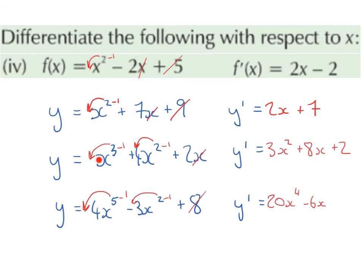In our next example, we have y equals x cubed plus 4x squared plus 2x. Again, we bring down the power in front, so the 3 comes down in front of the x, giving us 3x, and we reduce the power by 1. 3 take away 1 is 2, so we get 3x squared. Next, we have 4x squared. We bring down the power in front — this does not become 24, it becomes 2 multiplied by 4, which gives us 8. And then x squared, we reduce the power by 1. 2 take away 1 is 1, which is just 8x. Next, we have 2x, so we can just cross off the x, and we're left with 2. So the derivative of x cubed plus 4x squared plus 2x is going to be 3x squared plus 8x plus 2.